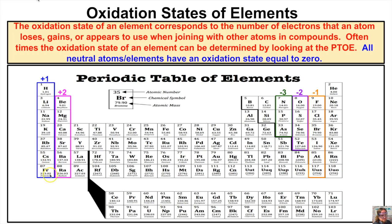Looking at the periodic table, we can determine oxidation states based on element locations. All elements in Group 1 have an oxidation state of +1. Group 2 elements have an oxidation state of +2. Group 17 elements have an oxidation state of −1. From oxygen down to tellurium, these typically have oxidation states of −2. Nitrogen, phosphorus, and arsenic typically have oxidation states of −3. These are some of the typical oxidation states used in an introductory chemistry course.